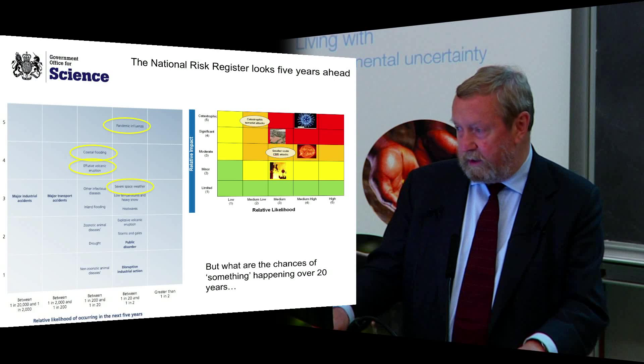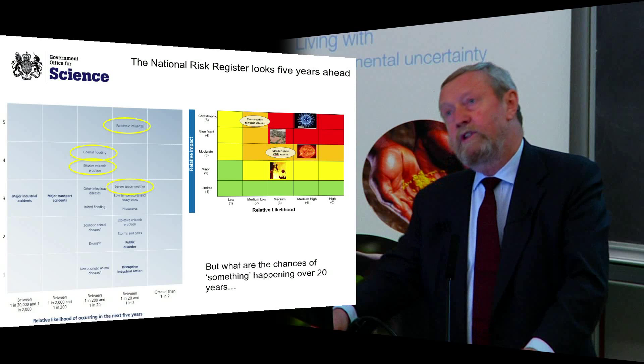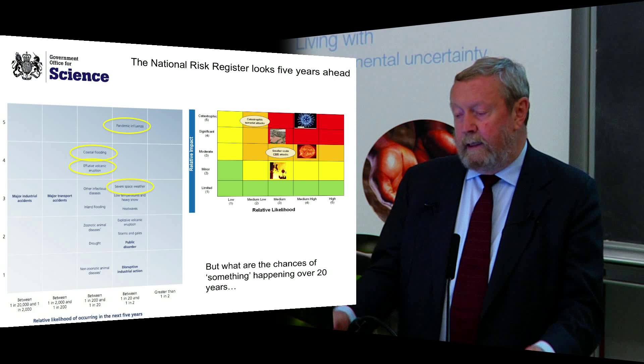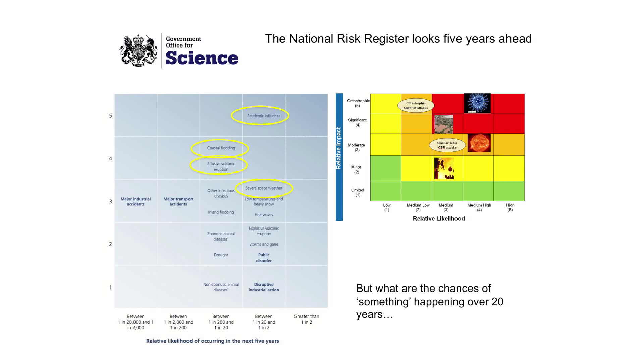The way that government deals with risk: first, the government has a thing called the National Risk Register. That does two things — it looks at the likelihood or chance of an event happening over five years, and it puts these events on two axes. On the bottom axis is the likelihood, and on the vertical axis is the impact. I'm going to talk about some of these issues and how we actually deal with them.